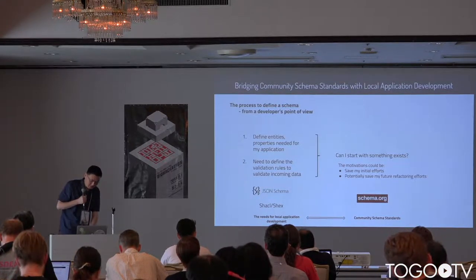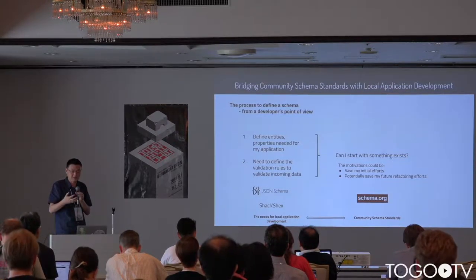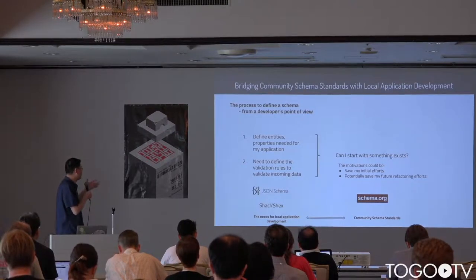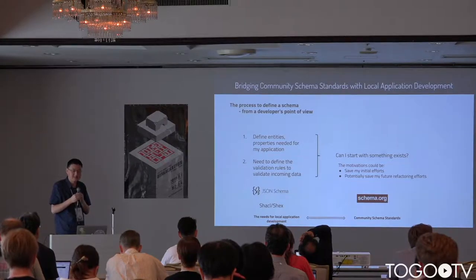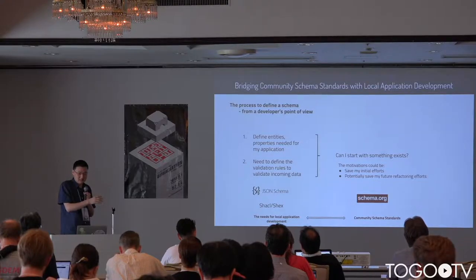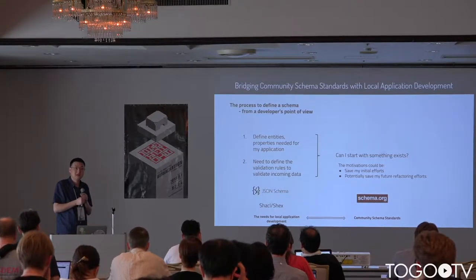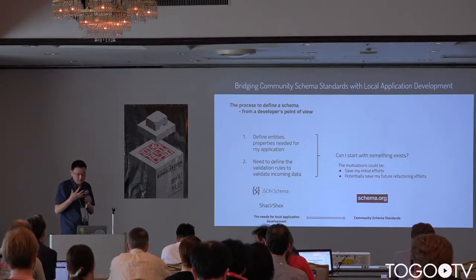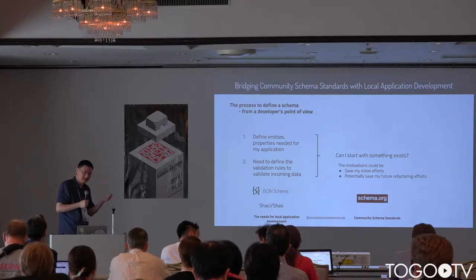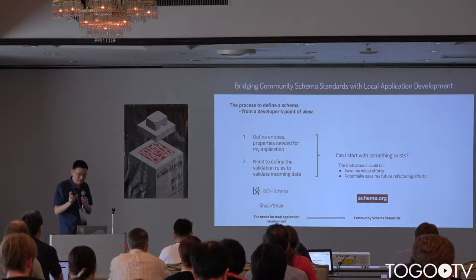Talking with developers in those centers, they also have their own needs. Making data interoperable is one thing they care about, but another is validation — when they develop an application, they need to define what entities they want to support and define the validation rules. Validation is really important and something they care about for their own data, maybe not as much for data they want to share across sites. Right now there's JSON Schema for JSON data and SHACL for RDF data, and we want to combine these two types of needs together.